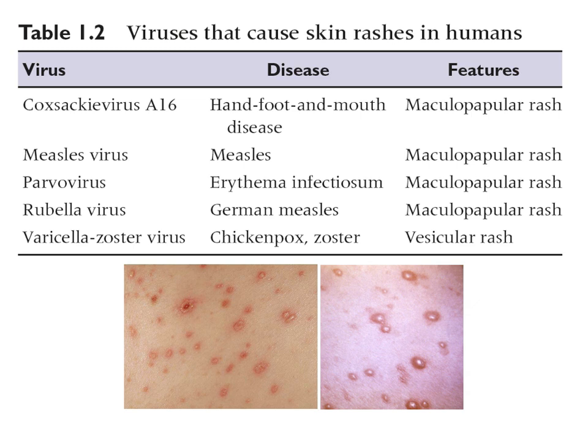A rash is one of the things viruses cause. Measles and other viruses can produce two kinds: a maculopapular rash — reddish and flat, sometimes with skin breaks in the center — or vesicular rashes, which are vesicles full of fluid. In both cases virus is present and interacting with the immune system to produce the rash.